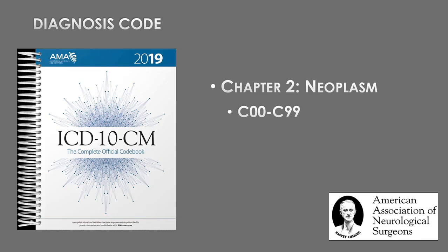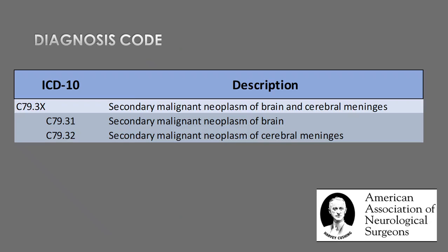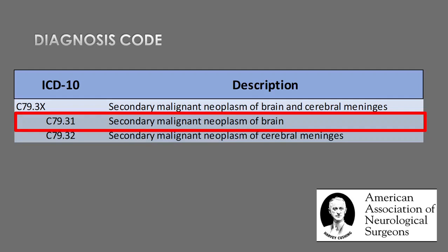We will first assign a diagnosis code for this lesion utilizing the ICD-10 book from the American Medical Association. The appropriate codes are found in the second chapter, which deals with neoplasm. The C79.31 code, which is specific for a secondary malignant neoplasm of the brain, will be utilized in these circumstances.